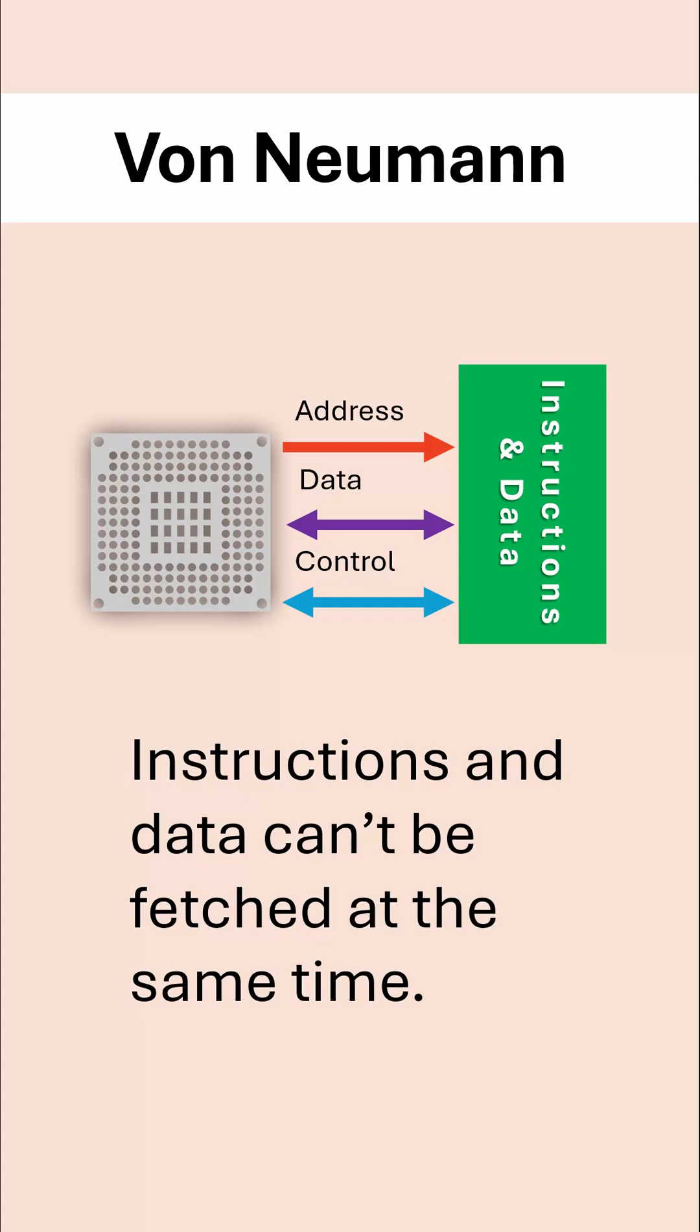Whereas in Harvard, because we've got two sets of everything, we can fetch an instruction at the same time we are fetching data. This could happen if you've got multiple cores or if you're doing things like pipelining.